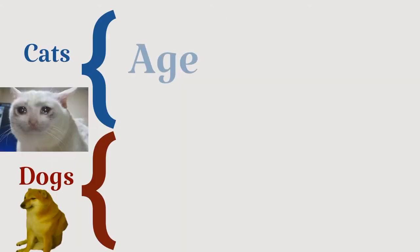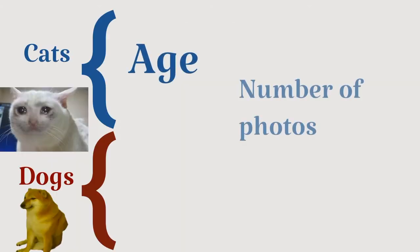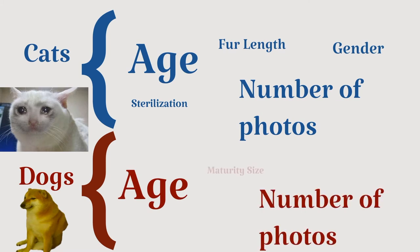From our decision trees, we learn that adopters primarily make their decision based on these factors for cats, and these factors for dogs. As you can see, the two strongest factors that play a part are the pet's age and the number of photos uploaded to their webpage. Who doesn't love photos of cute animals?